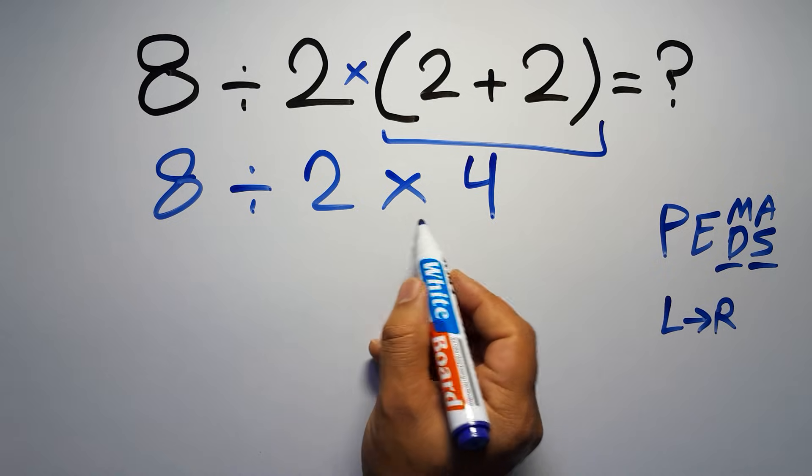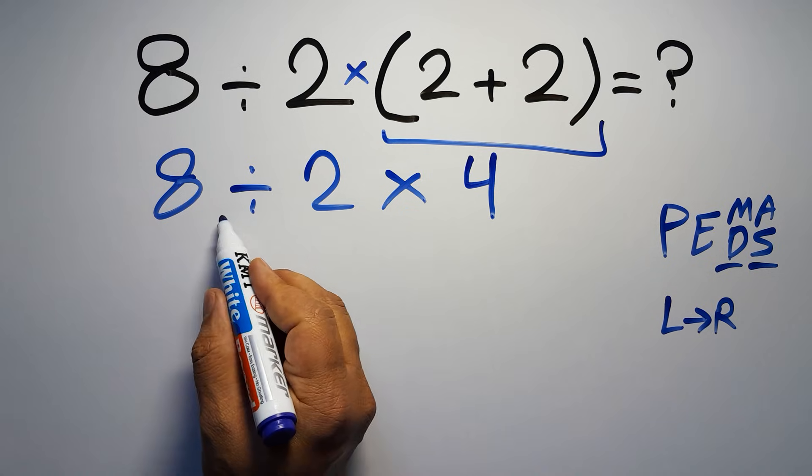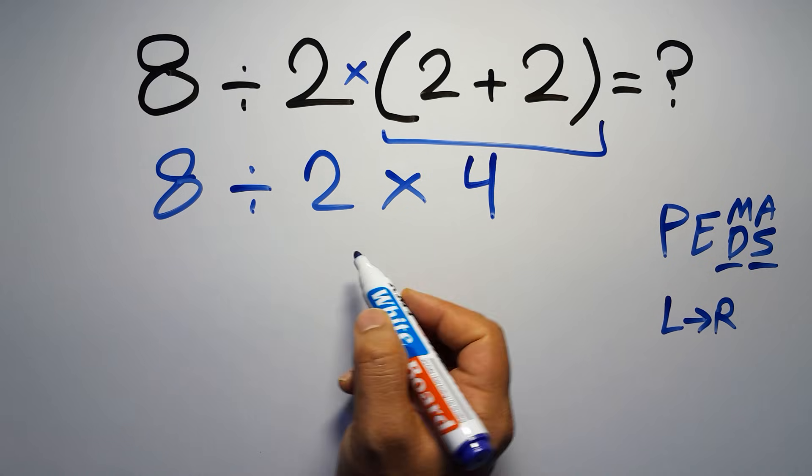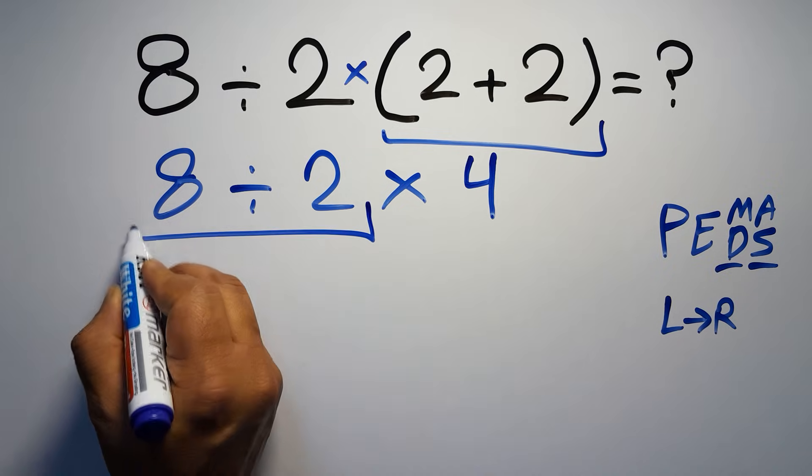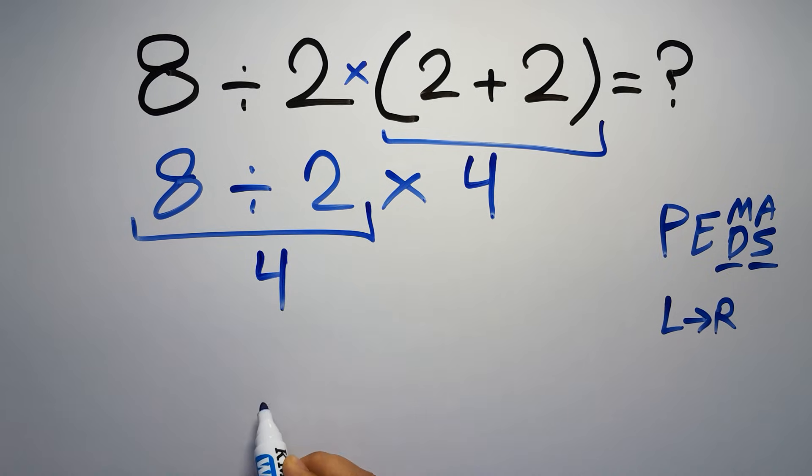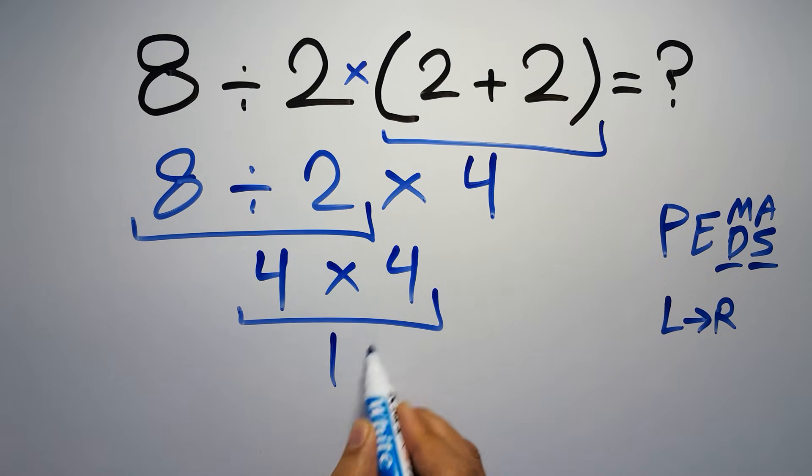Now we have one division and one multiplication. As I said, multiplication and division have equal priority, and we have to work from left to right. So here, first we have to do this division, then this multiplication. So first, 8 divided by 2, which equals 4. So 4 times 4, which gives us 16.